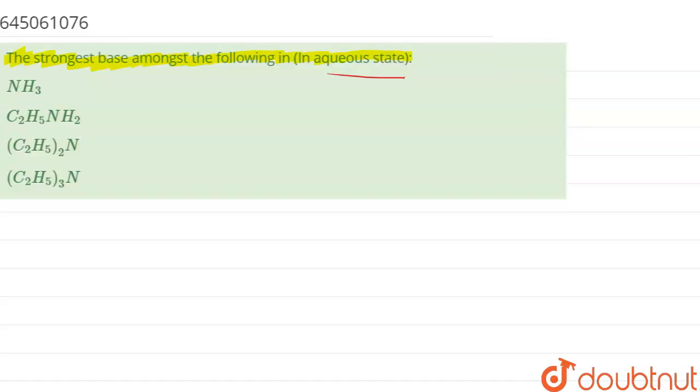(C2H5)2N is more basic than (C2H5)3N, which is more basic than C2H5NH2, which is more basic than NH3.